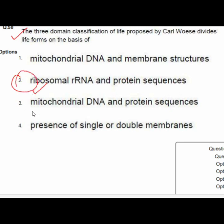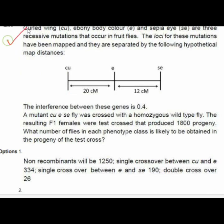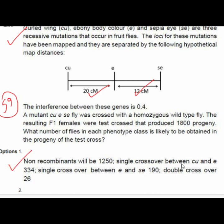Question 59: Curled wing, ebony body color, and sepia eye were three recessive mutations mapped in fruit flies. The number of flies in each phenotype class likely obtained in the progeny of a test cross — option 1 is correct: non-recombinants will be 1250; single crossovers between cu and e will be 334; single crossovers between e and se will be 190; and double crossovers will be 26.